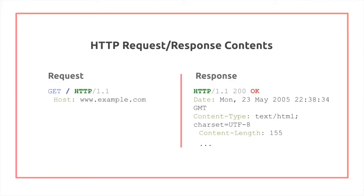Your request has a method — GET, POST, PUT, DELETE, and so on — the resource name, which is sometimes slash, and HTTP/1.1, which is the version. As part of the response, as you can see here, you can also get back the status code, which is hopefully 200, which we'll learn about later.